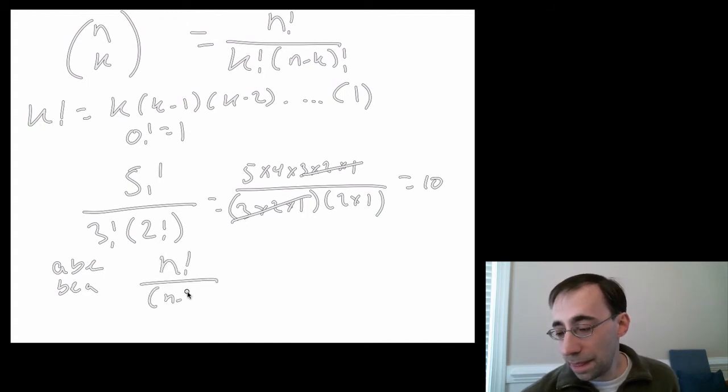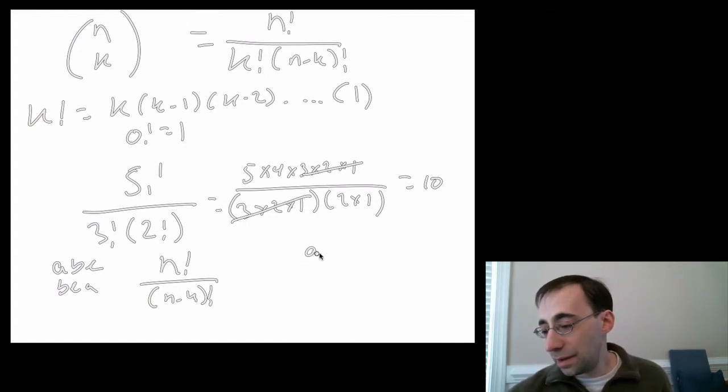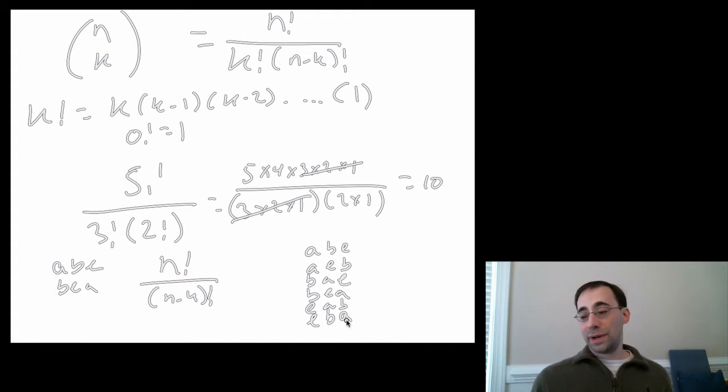Turns out that the formula is relatively similar. It's the exact same formula without the k factorial, because there are k factorial ways of arranging k objects. So, for instance, for three: ABE, AEB, BAE, BEA, EAB, EBA. There's six ways of arranging three things. 3 factorial is 3 times 2 times 1, which is 6. So removing the division by k factorial increases the number of possible ways of doing something by k factorial, which is the number of different ways of arranging things in different orders.